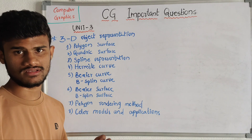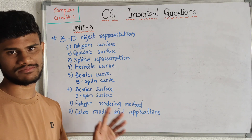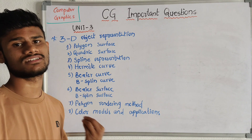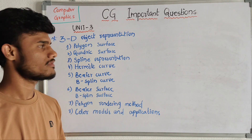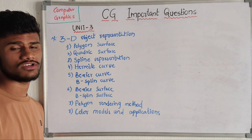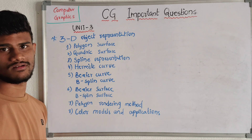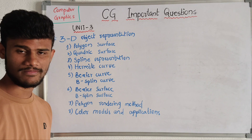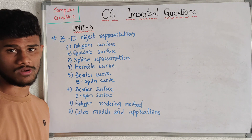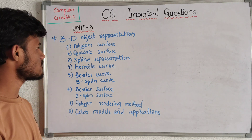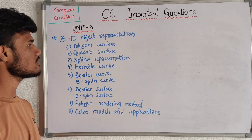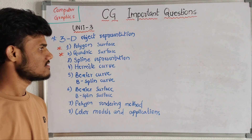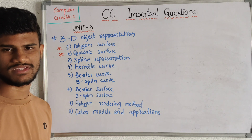Now coming to our third unit. This third unit is completely of 3D graphics representation. Here we represent concepts in 3D objects. We have two main concepts: structure and curve — different types of structures and different types of curves with different models. The first question is polygon structure and quadric structure.